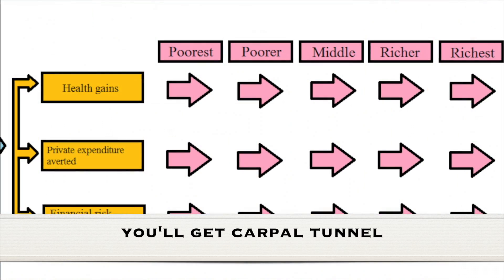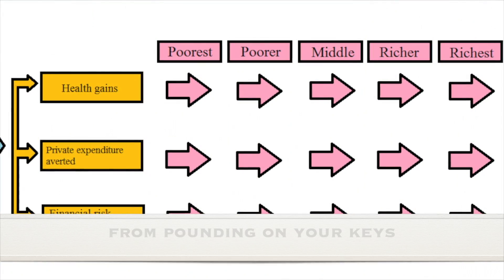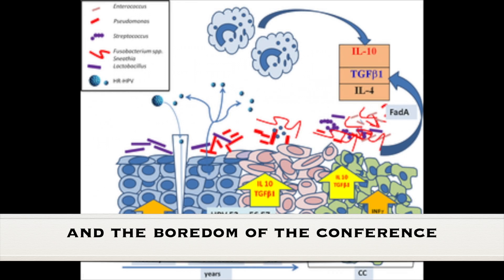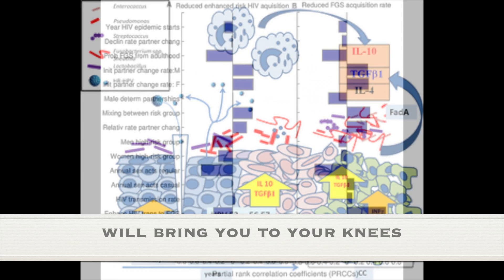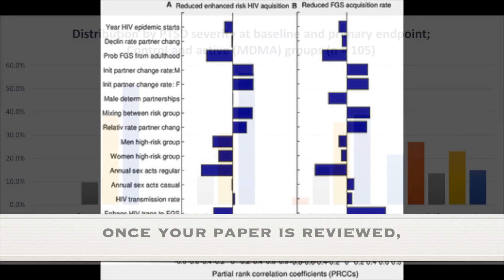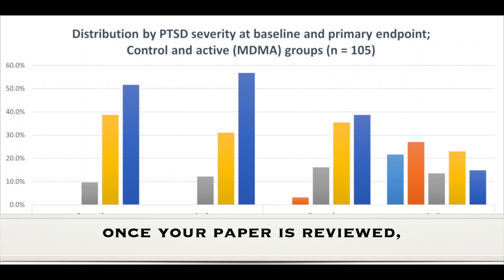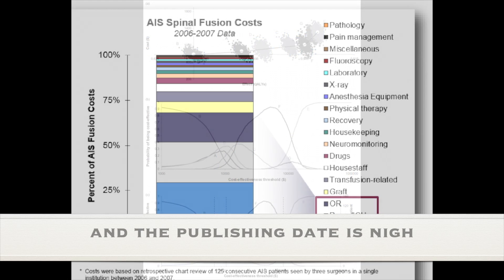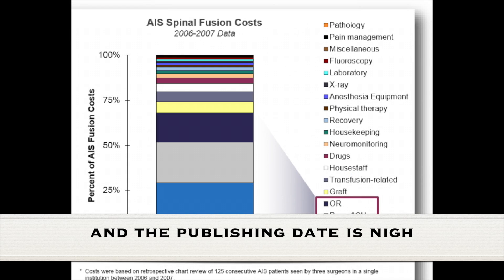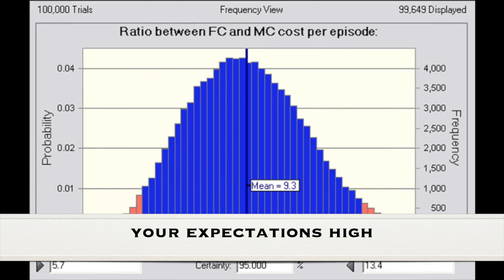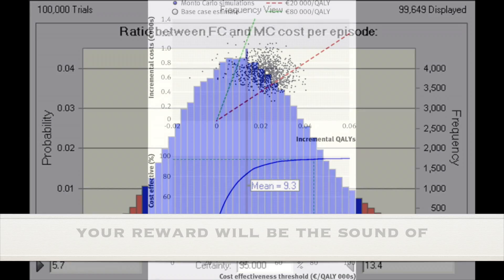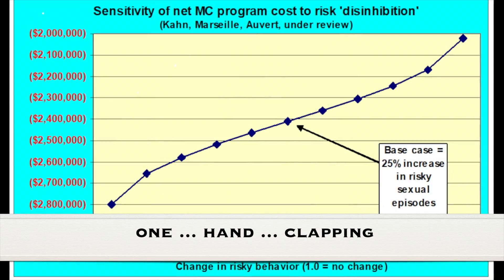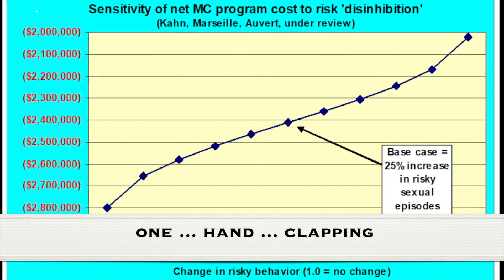You'll get carpal tunnel from pounding on your keys. And the bottom of the conference will bring you to your knees. Once your paper is reviewed by a journal and approved, and the publishing date is nigh, your expectations high — your reward will be the sound of one hand clapping.